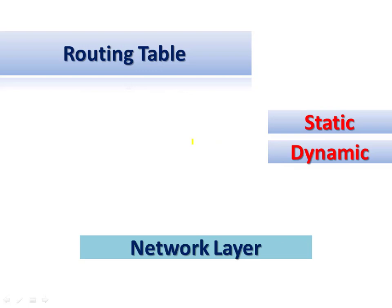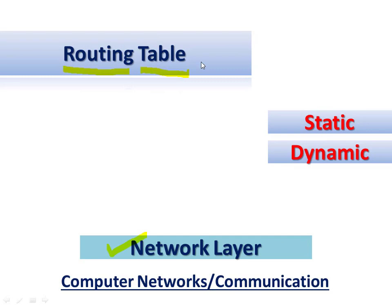The topic we are going to study in this video is the routing table. Whenever we want to transmit a packet from source to destination, the network layer in TCP/IP protocol plays the role of collecting data, finding the route, and then forwarding the packet. How to find a route and forward a packet is based on the entries in the routing table. There are two cases: static entry and dynamic entry.